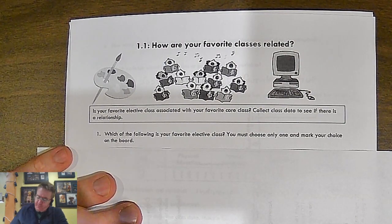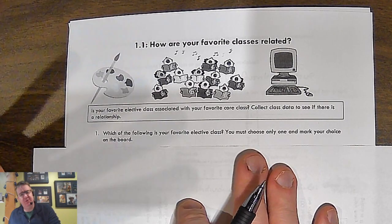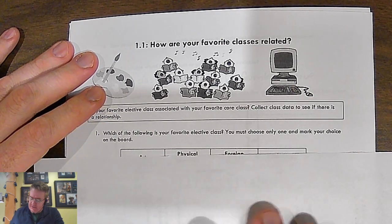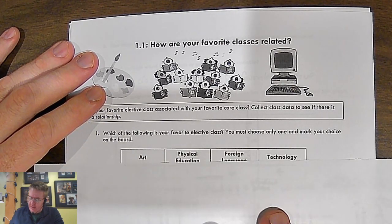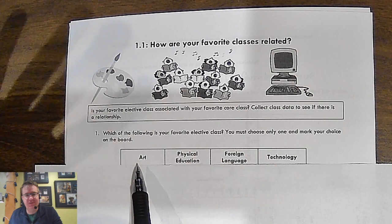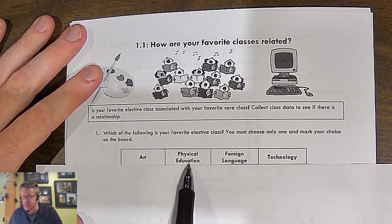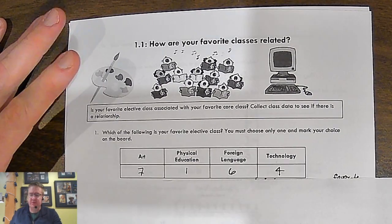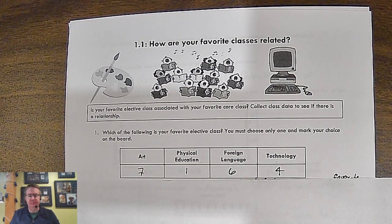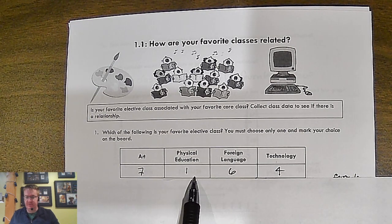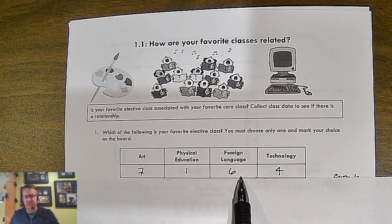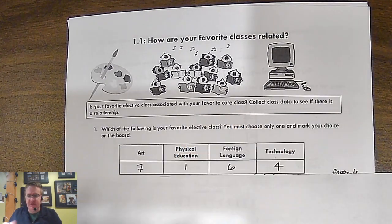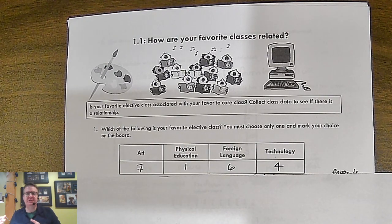First thing I would have you do when you walk into class is go through and pick your favorite class. I would have four on the board: favorite elective class - art, PE, foreign language, and technology. Now the data here is from last year, so I've got 18 kids who were in class last year. Seven picked art, one picked PE, six picked foreign language, and four picked technology. Before we get into how we can display this, and that's the whole goal of today, is how do you display this data?